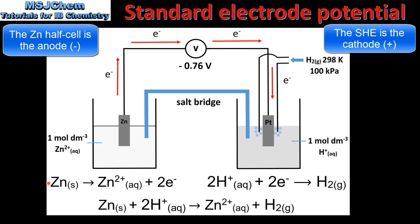Here we have the equations for the reactions that occur at the electrodes in each half cell. In the zinc half cell we have the oxidation of zinc to form zinc 2+ ions. In the standard hydrogen electrode we have the reduction of hydrogen ions to form hydrogen gas. And here we have the overall equation for the reaction. As you can see we have a reading on the voltmeter of negative 0.76 volts. This is the standard electrode potential of the zinc half cell.